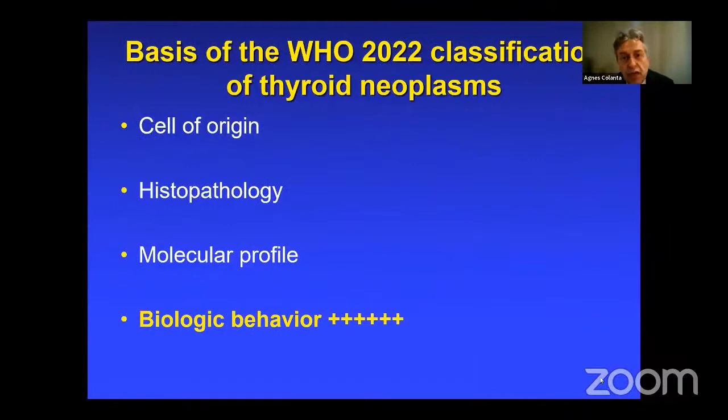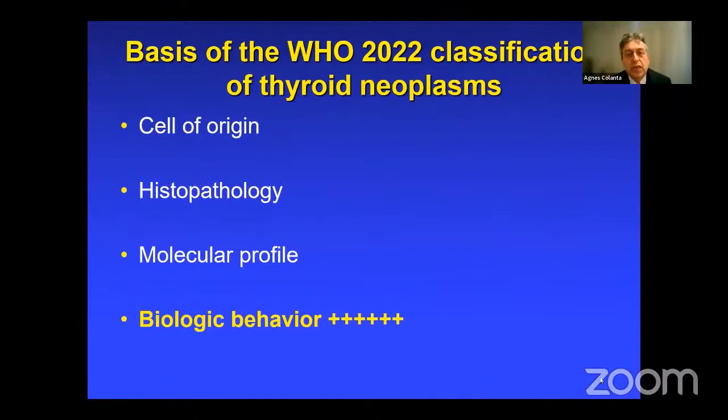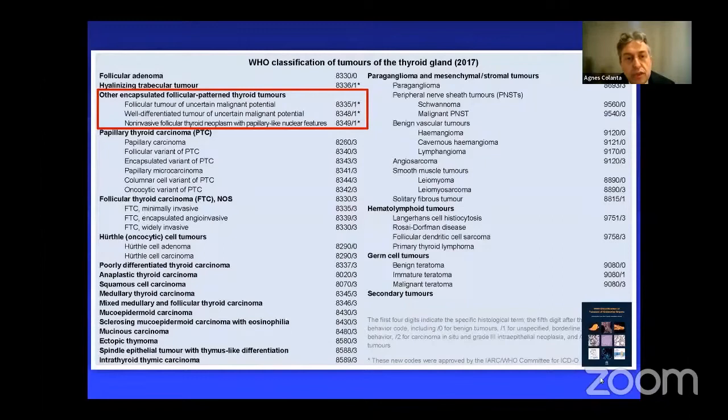What is the basis of this new WHO 2022 classification of thyroid neoplasms? The basis is the same as has been done for many decades: cell of origin, histopathology — how the tumor is growing — and of course, now, molecular profile. Perhaps what really made the difference is that we truly took into account the biologic behavior of the tumor in many of the entities.